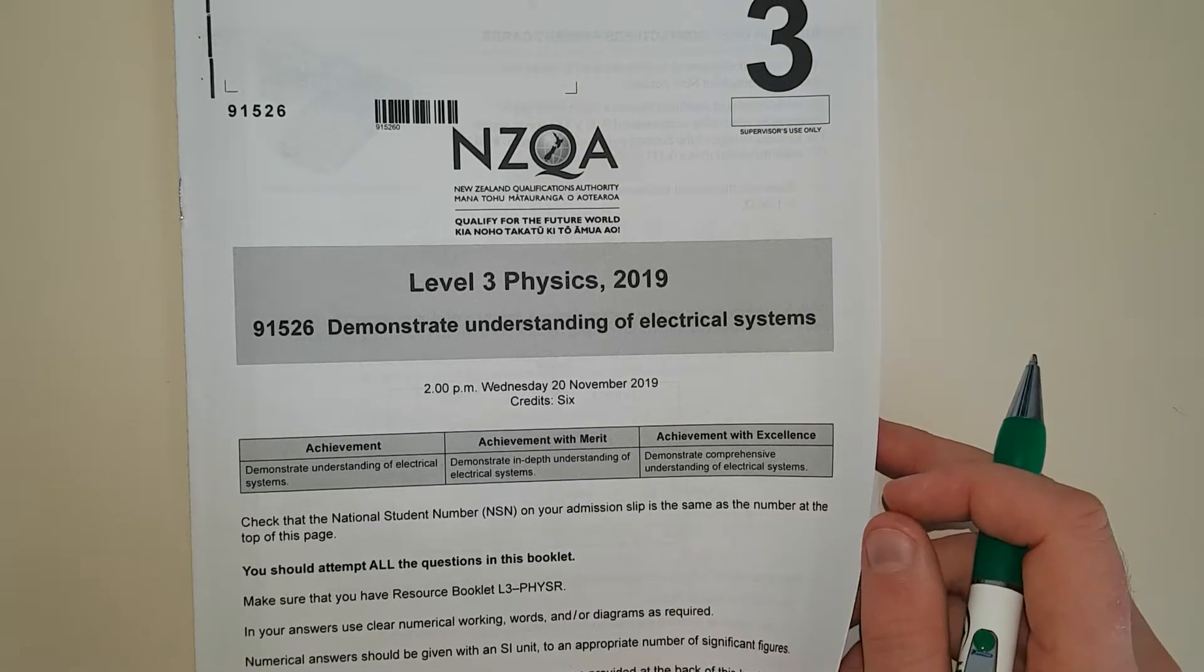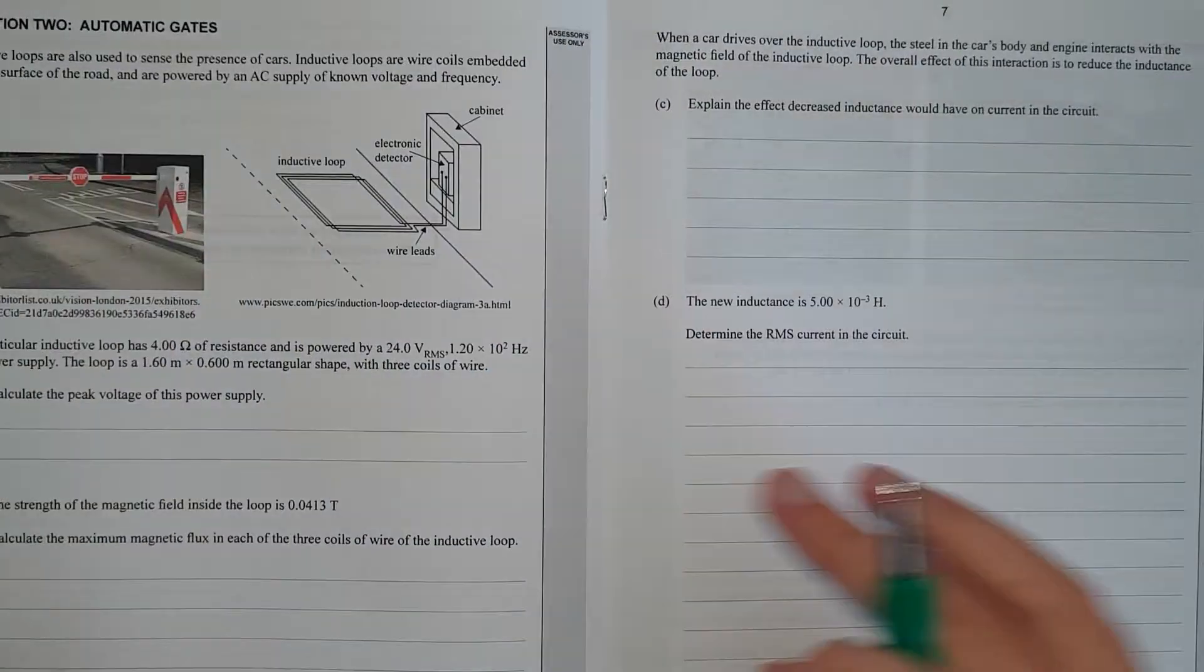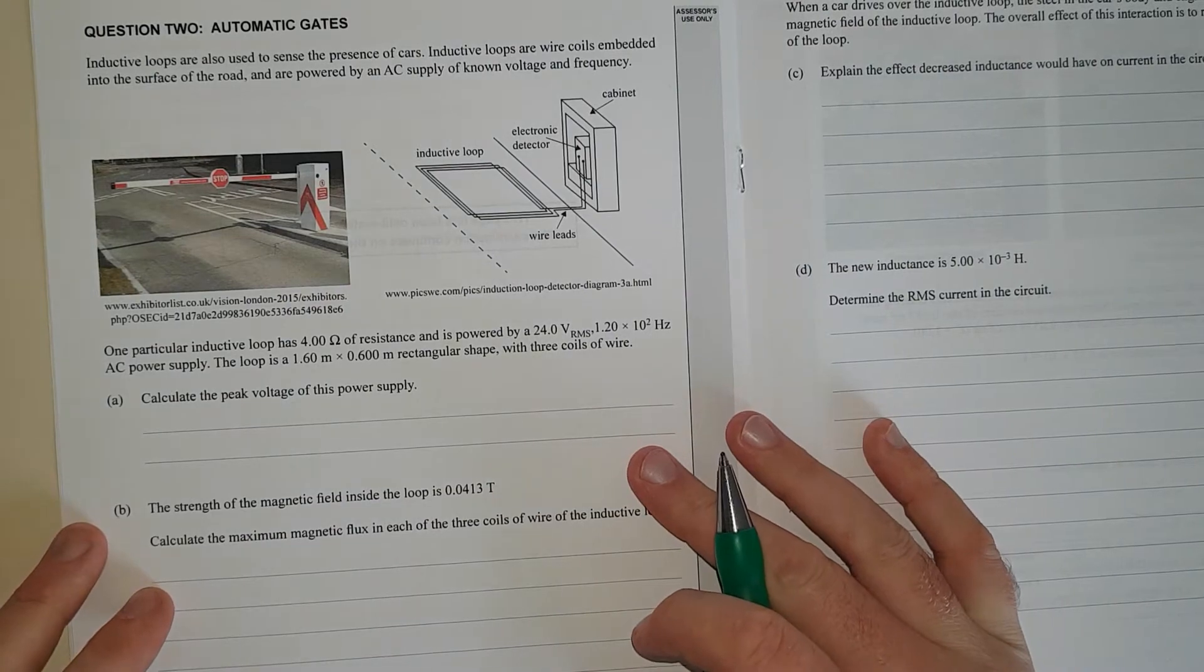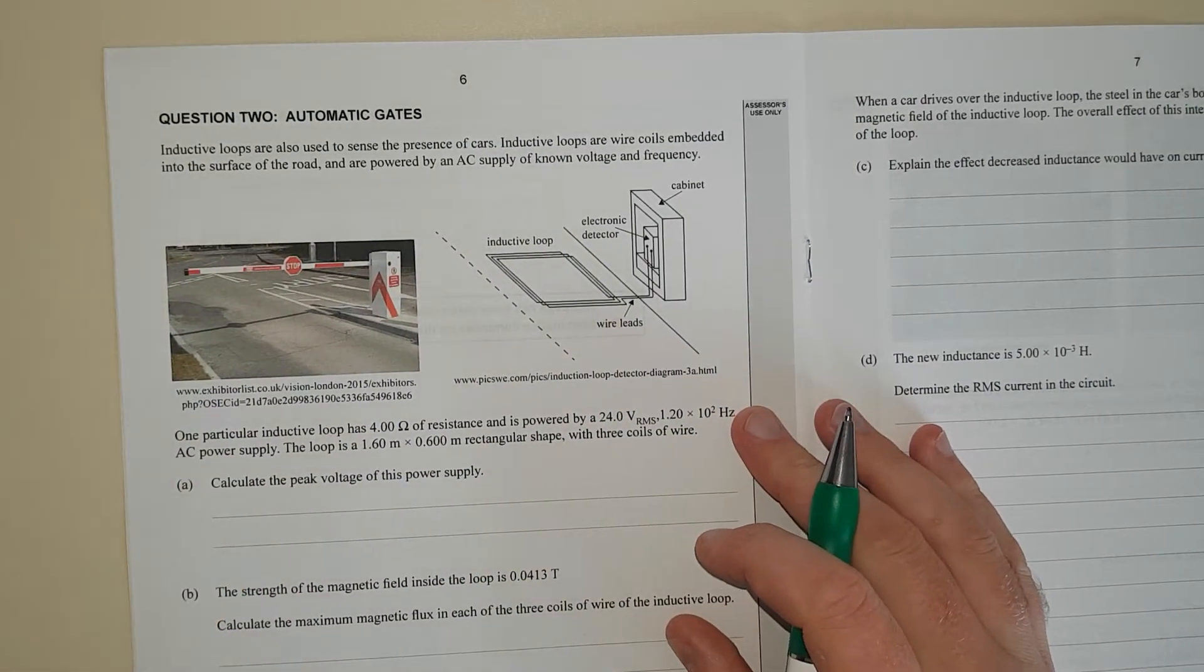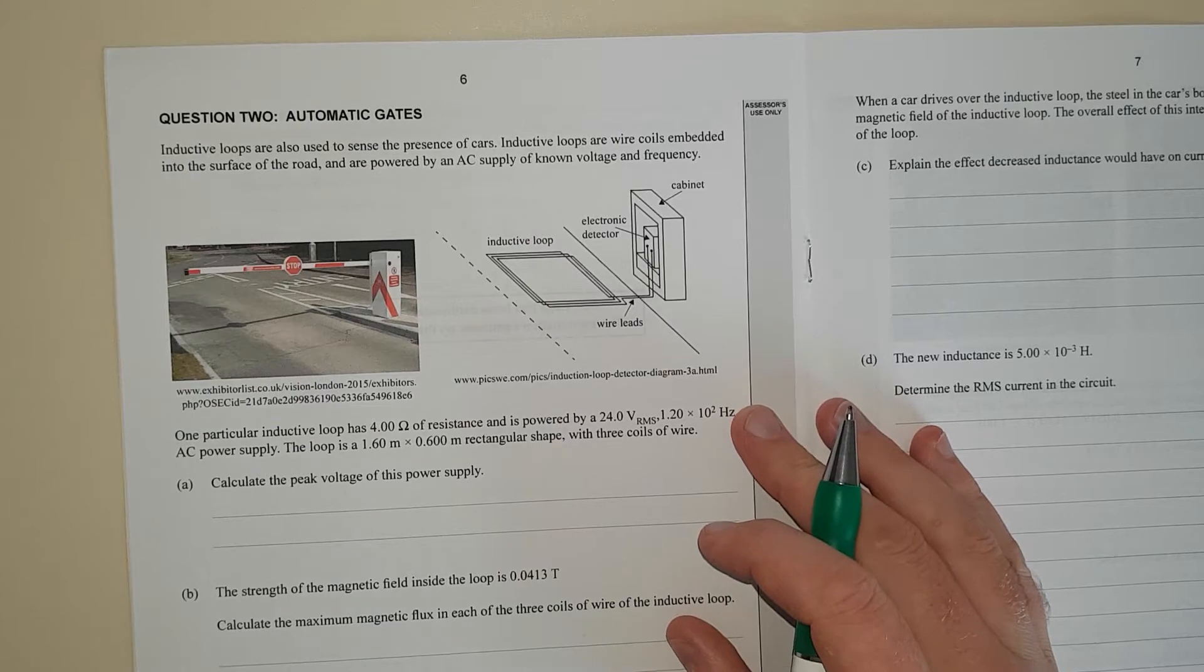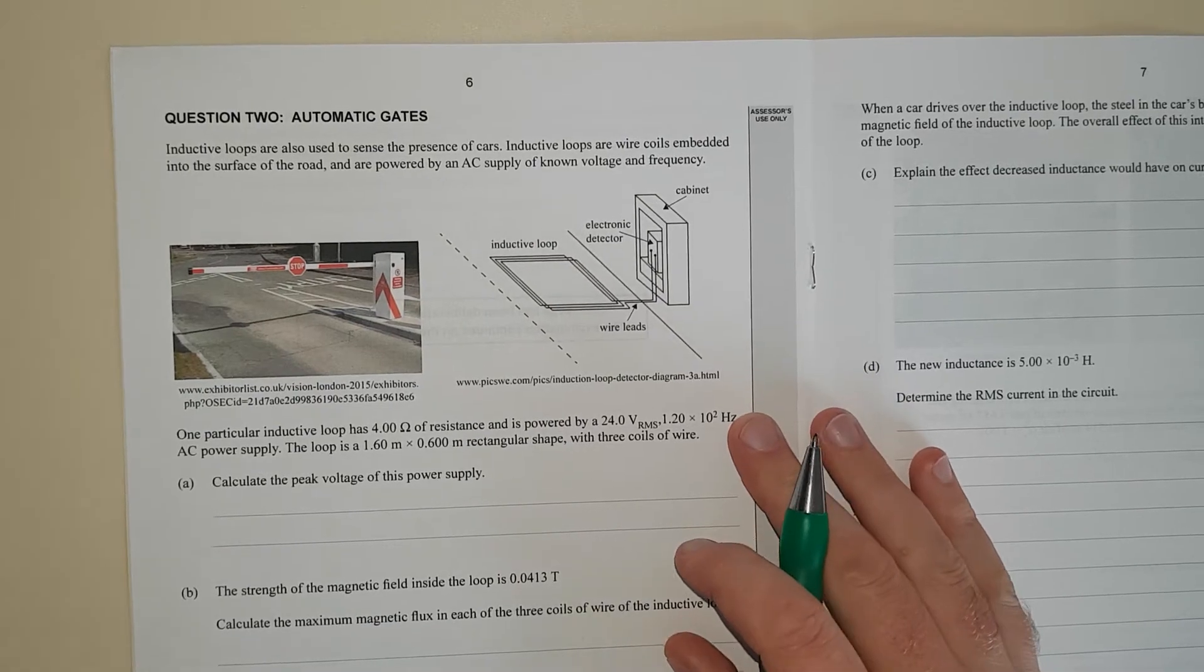This is question 2, 2019 level 3 electricity exam. Inductive loops are used to sense the presence of cars. Inductive loops are wire coils embedded in the surface of roads and are powered by AC supply.